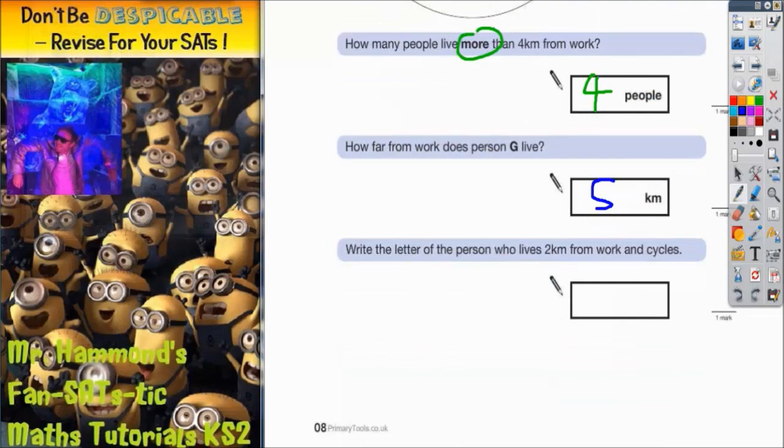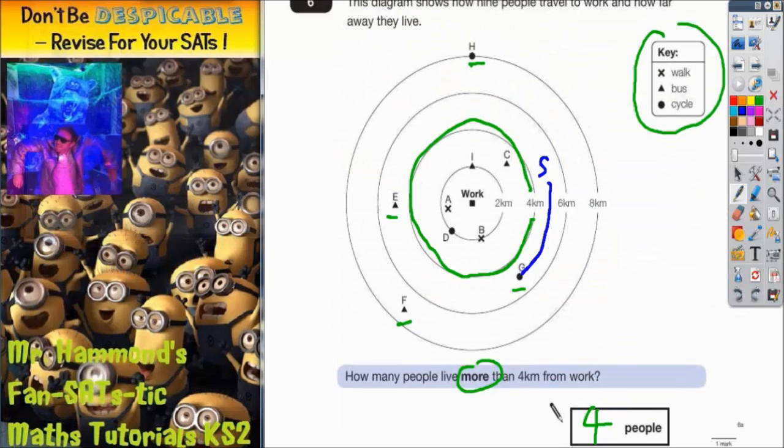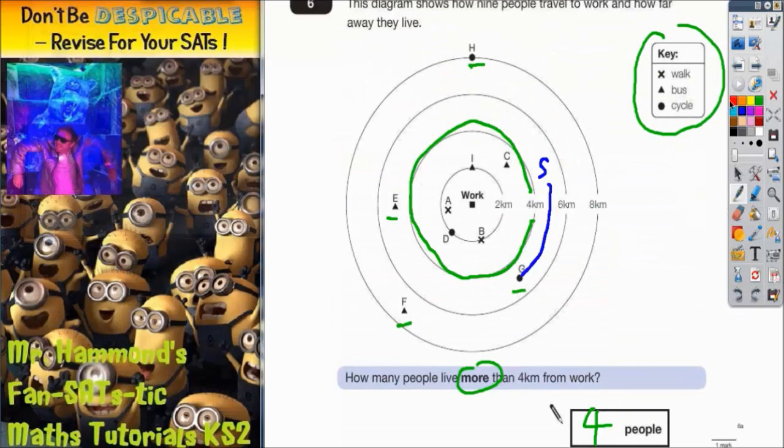The final question says, write the letter of the person who lives 2 kilometers from work and cycles. Well, 2 kilometers from work is on this line. Now, as you can see, we've got I, D, and X all sitting on the line.